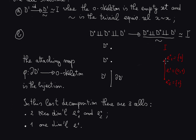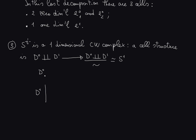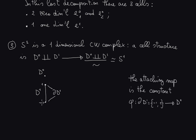As a third example, we discuss S1, the unit circle, and give it a one-dimensional CW complex structure. We take as the zero-skeleton just one point D0, and as disjoint union, one one-dimensional disk D1. The attaching map goes from the boundary of D1 — which is a disjoint union of the points {−1, 1} — to D0. Since D0 is a single point, there is only one such map, sending both boundary points to D0.